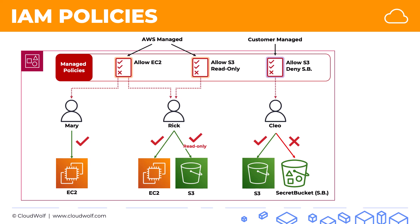Now let's look at another kind of policy. The situation has changed: Rick no longer needs any sort of access to S3 and shouldn't have access at all. So we can simply remove the attached policy. But to make this more interesting, we're going to attach another policy to Rick — an inline policy. An inline policy is different from a managed policy in that it can only be attached to one user. It's attached directly into their user profile and cannot be attached to any other user. Here we're attaching this inline policy to Rick, and what it's doing is denying access to S3.